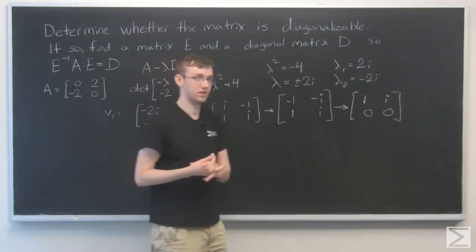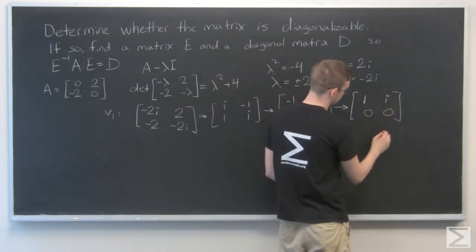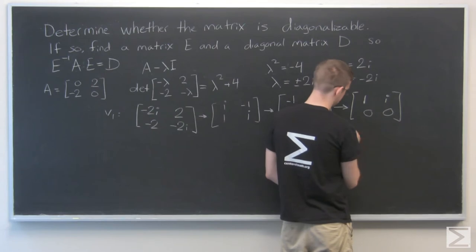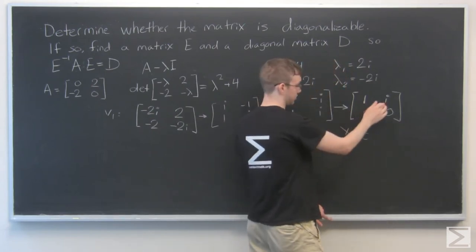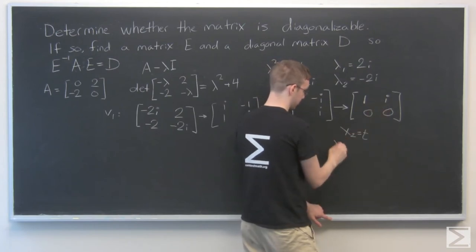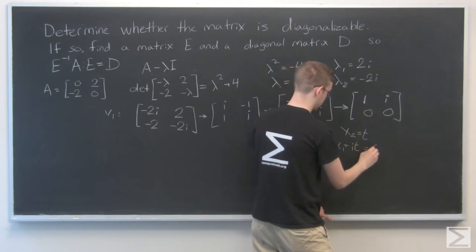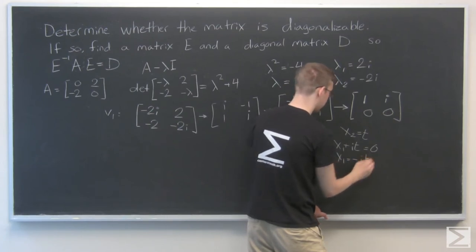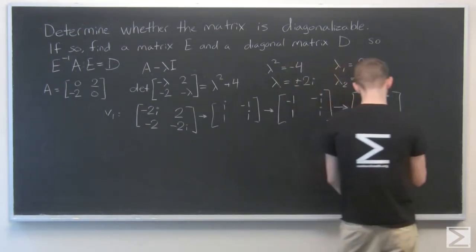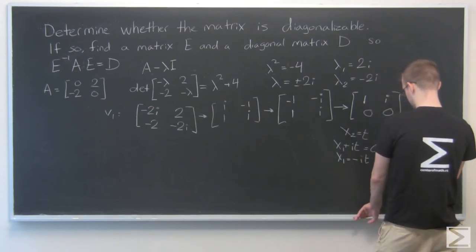Now to get the eigenvector, we'll say that x2 is equal to t. So that's x1 plus i times x2, and we'll say equal to 0. So x1 is just equal to negative i times t. So that gives us the relationship t times minus i and 1.